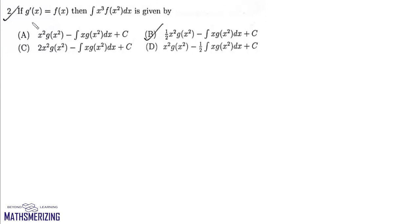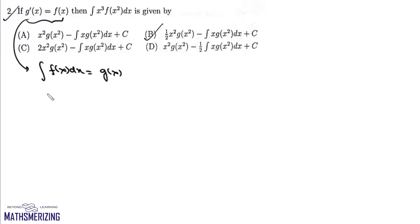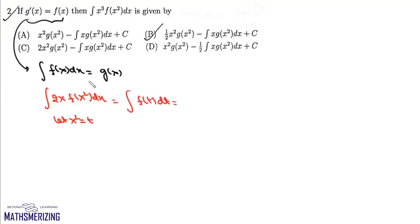Question 2: given that G dash X equals FX, we need to find the integral of X cubed into F of X squared dx. Since G dash X equals FX, integral of FX dx equals GX plus C. To solve the main integral, we solve the auxiliary integral of 2X into F of X squared dx. Taking X squared as T, we get integral of FT dt, which equals GT plus C, which is G of X squared plus C.